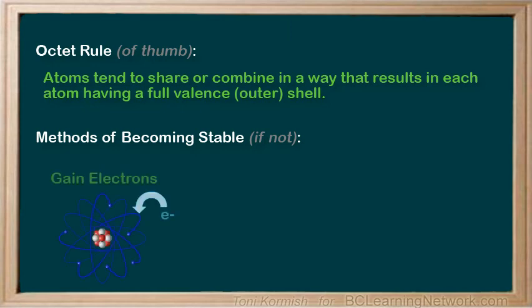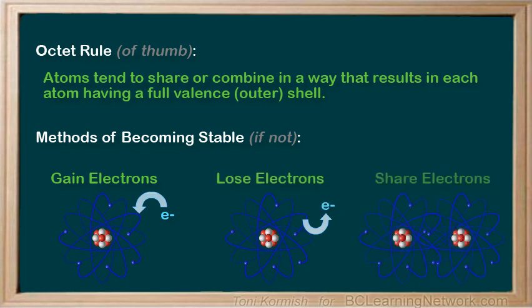An atom will either gain electrons, lose electrons, or share electrons to become stable.